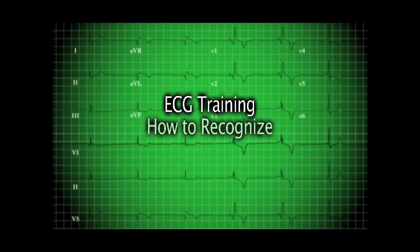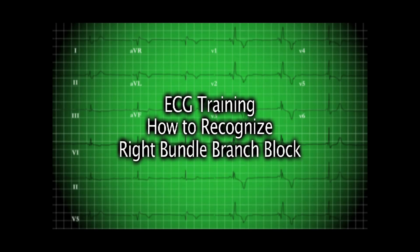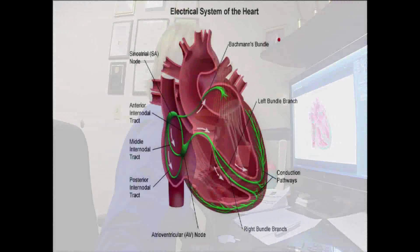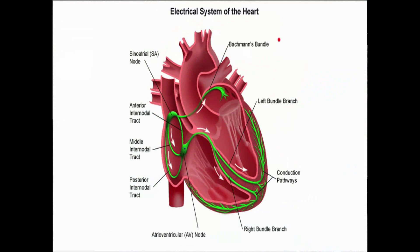Today's talk is about how to recognize right bundle branch block. Before we talk about right bundle branch block, let's review normal conduction so we can see the difference between normal and abnormal. We're going to talk about conduction through the ventricles only, so I'll start here in the AV node. In normal conduction, the impulse comes out of the AV node, down the bundle of His, or the common bundle.